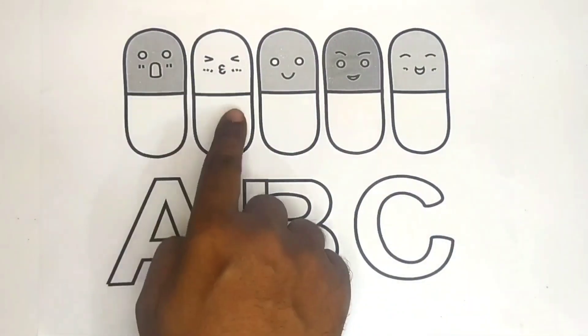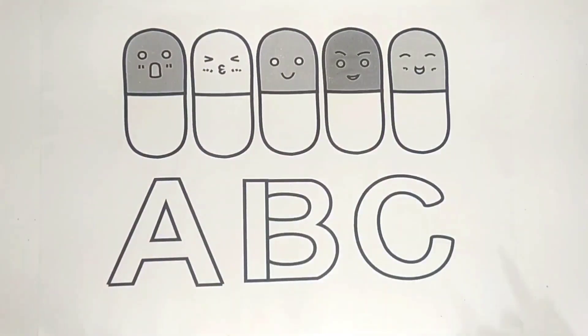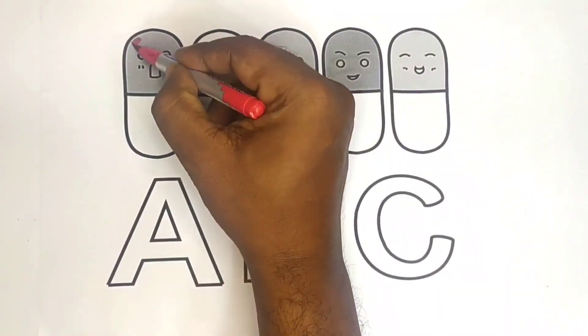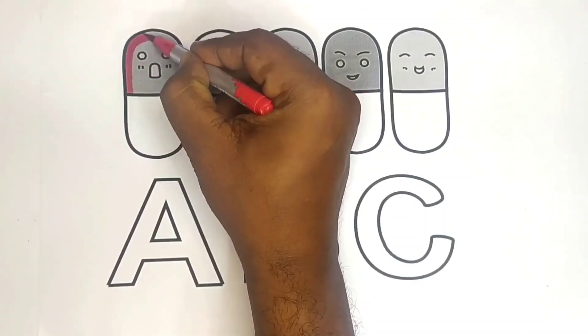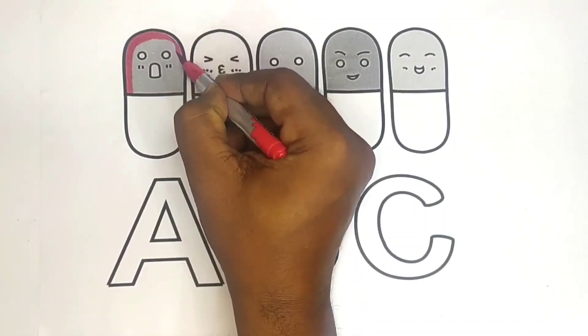Today we will learn A, B, C. One, two, three, four, five. First we will learn A, red color. This is red color.